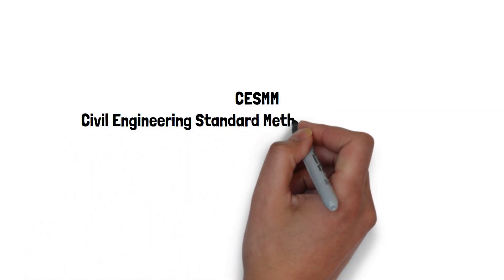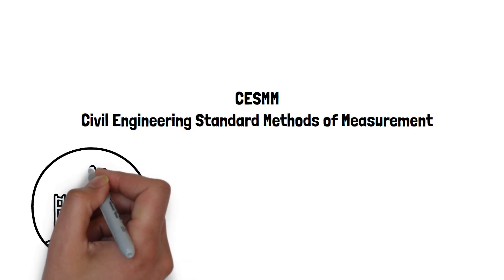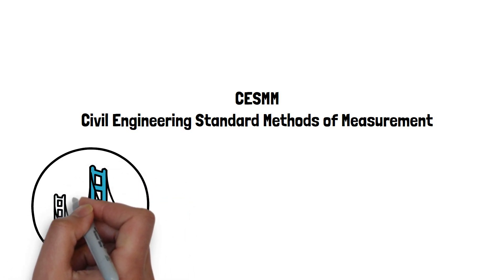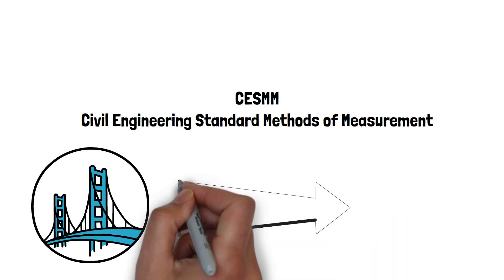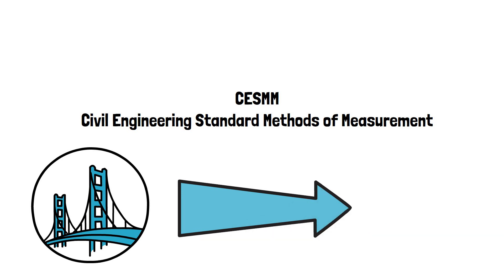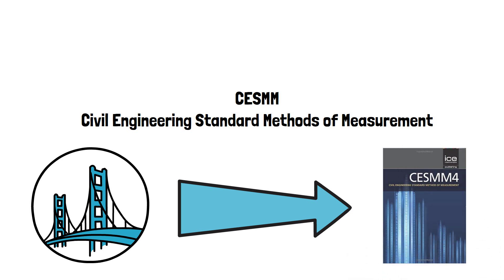CESMM stands for Civil Engineering Standard Methods of Measurement, and it is a standard which incorporates rules and regulations for measuring elements of major civil engineering projects. The first edition was published in 1976, but there have been numerous versions and updates throughout the years to ensure the information is still relevant to the present day and to ensure the standards do not get left behind current building methods and innovations. The most recent and up-to-date version is CESMM 4, which was published in April 2012.